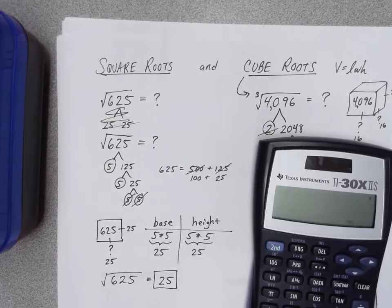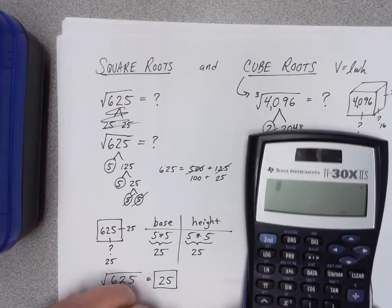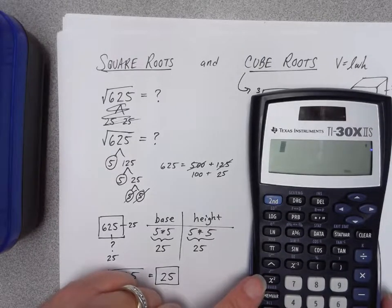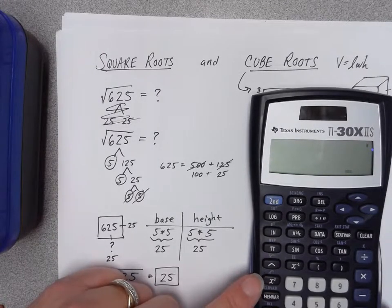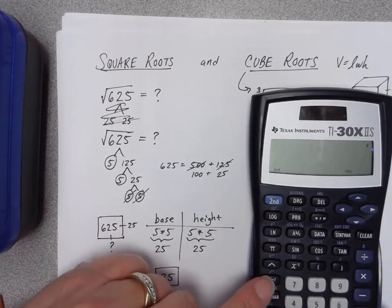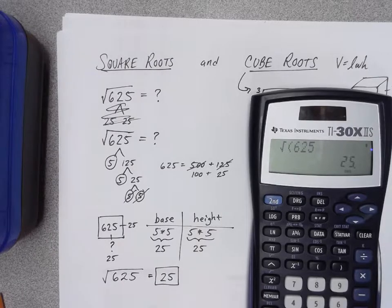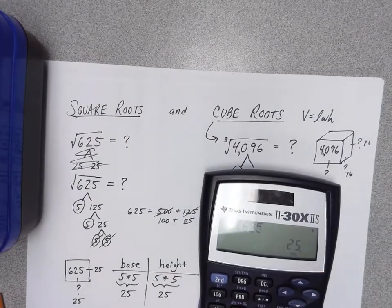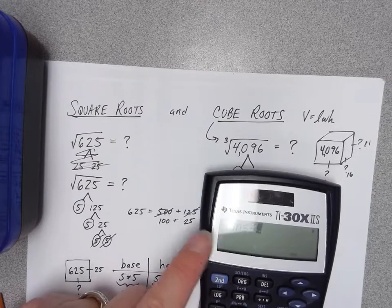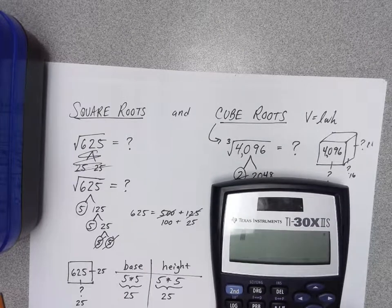Now let me show you how to do this on a calculator. To find the square root of 625, there's a square root symbol sitting right below the x-squared button. Since it's labeled in blue, you press the second button and then that button, type in 625 as your area, and press equals — you get an answer of 25, which matches what we found. To double-check: press the x-squared button to square your answer of 25, and you get 625. It checks out.